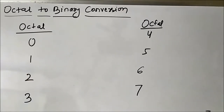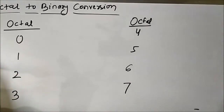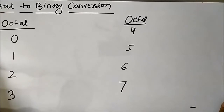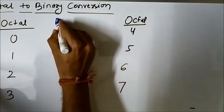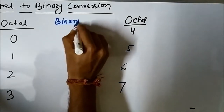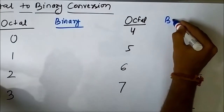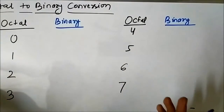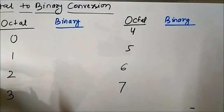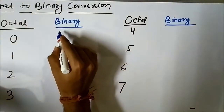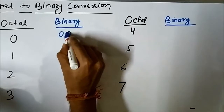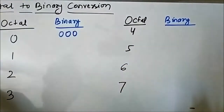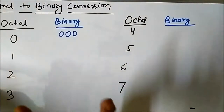Now, if we want to represent the same symbols in their equivalent binary form — suppose we want to represent each of those octal symbols in binary form — we can write zero as 0 0 0. That is the three-bit binary representation. Why we are using three bits, I will also come to that.